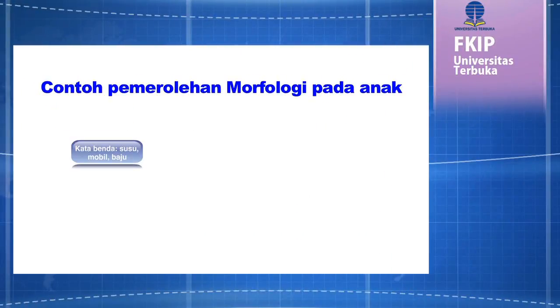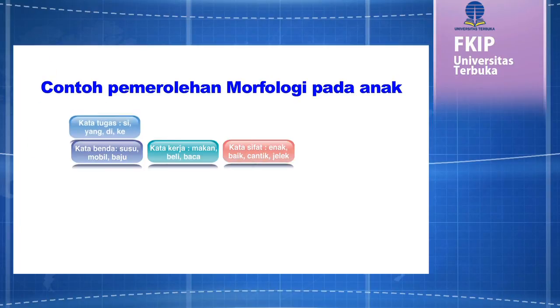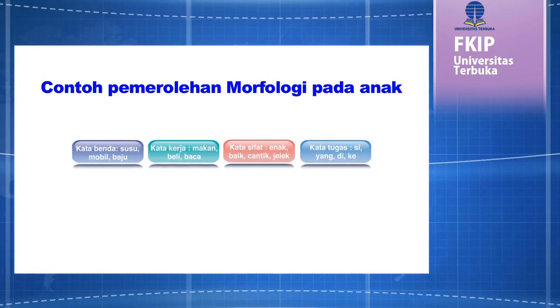Berikut ini contoh pemerolehan morfologi pada anak. Untuk contoh kata benda, biasanya anak mengucapkan kata: susu, mobil, baju. Untuk kata kerja, biasanya anak mengucapkan kata: makan, beli, baca. Untuk kata sifat, contohnya kata: enak, baik, cantik, jelek. Untuk kata tugas, contohnya adalah kata: si, yang, di, ke.